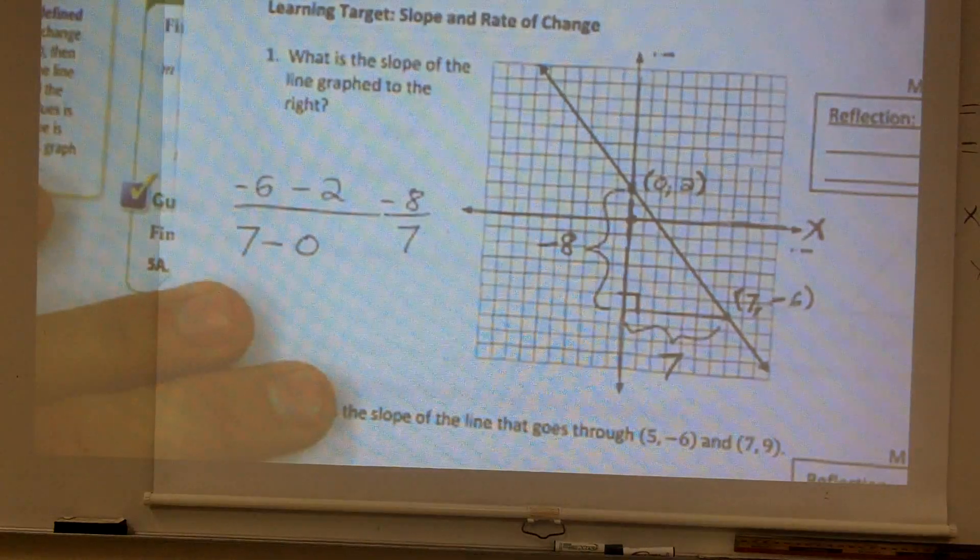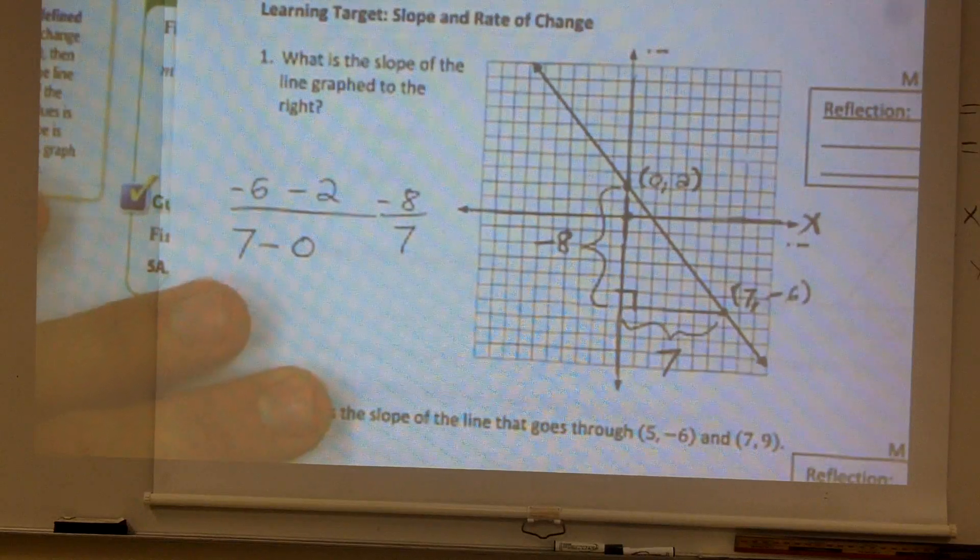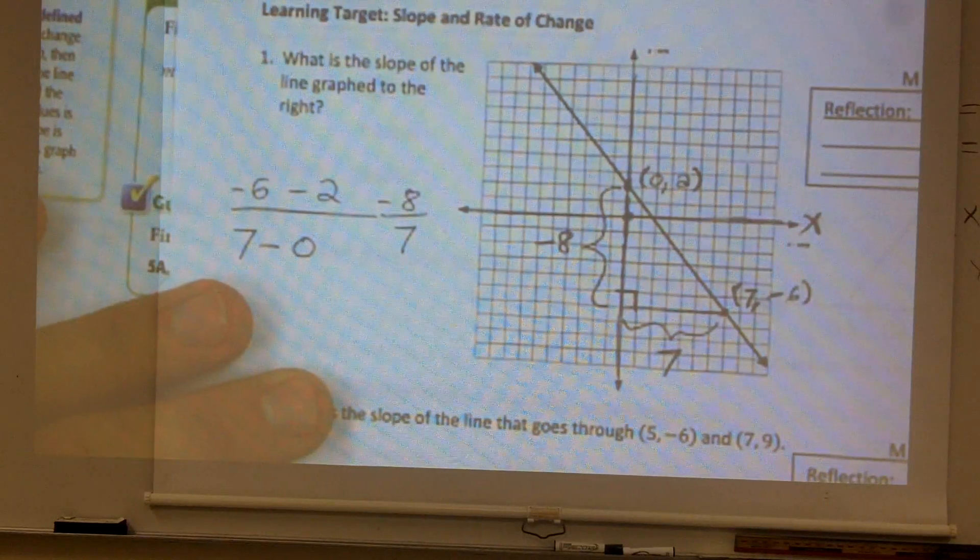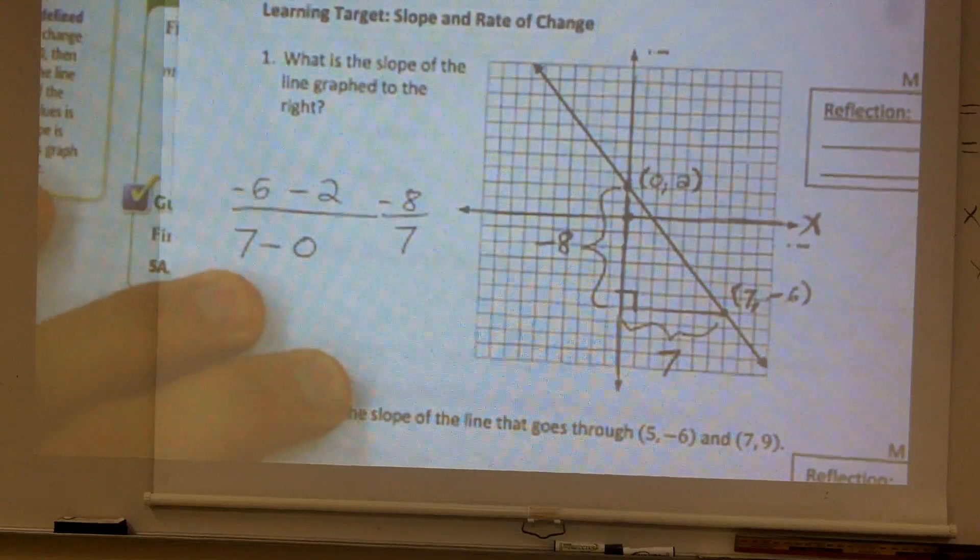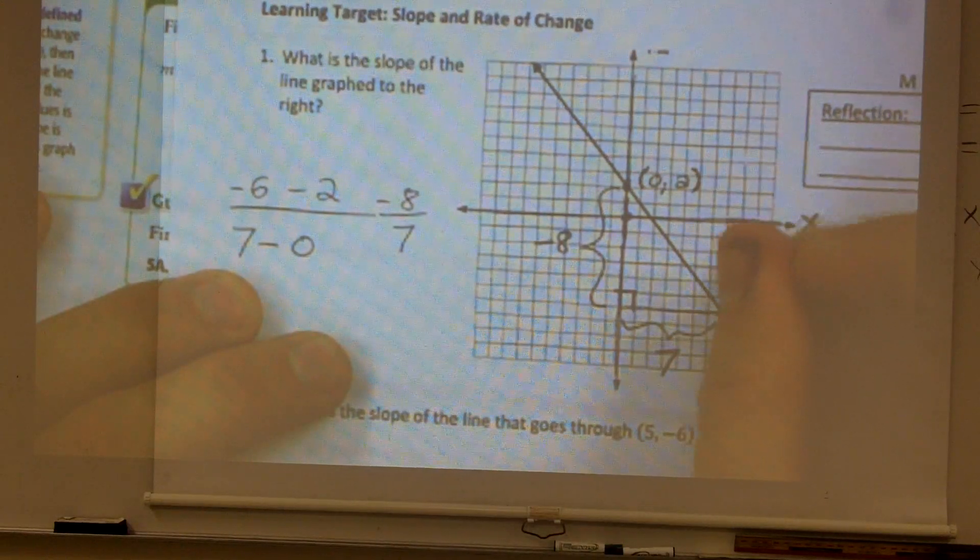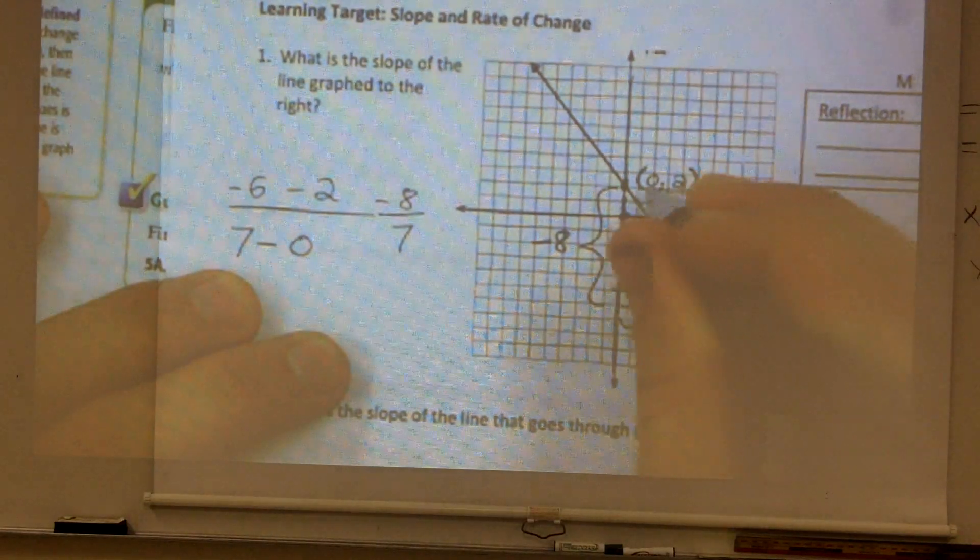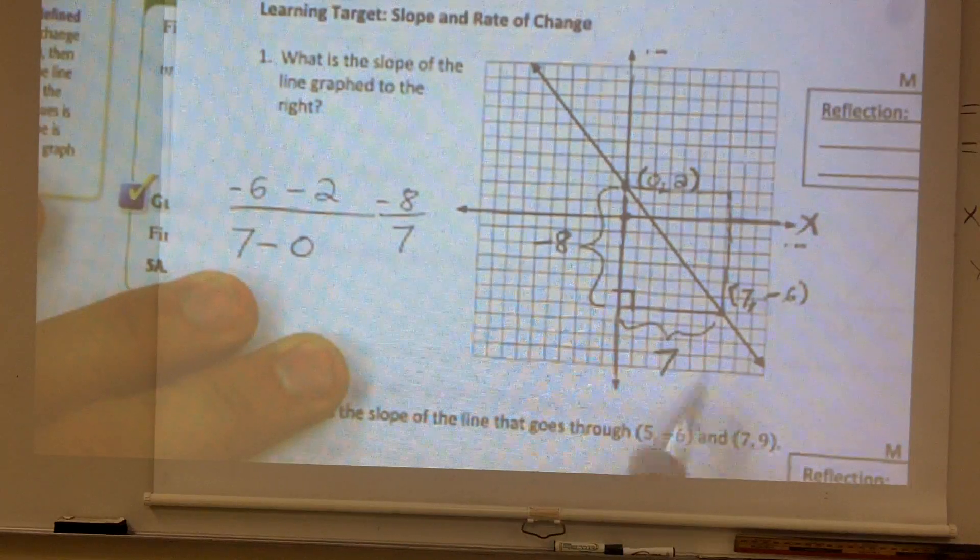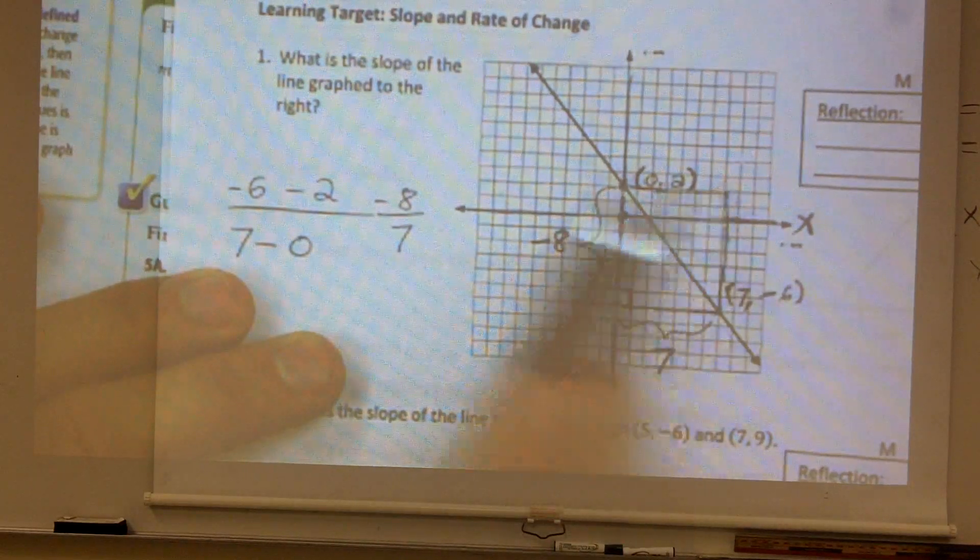Now some of you might have gotten a different answer. Some of you might have said, oh, Mr. Goelian, I got 8 over negative 7. And how would you get that answer? Well, you guys could also have done a slope triangle going up and to the left, right? You guys notice you also could have done a triangle like this.